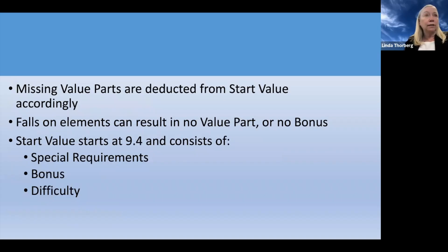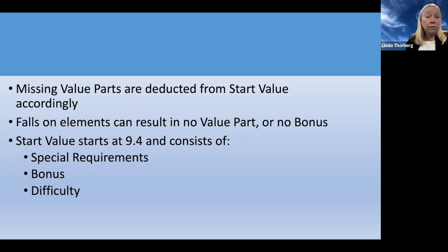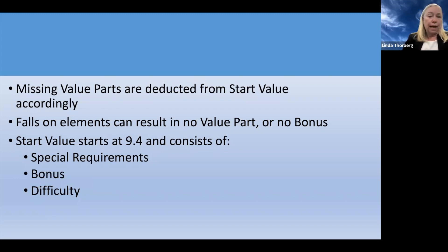Missing value parts are deducted from the start value. Your start value begins at 9.4, then we deduct any missing value parts and any special requirements — each worth two-tenths — from the start value, and then add back in the bonus earned that day. If she falls on an element, it could mean no value part and no bonus if she didn't touch the bar or beam at all, or she may get a value part if she landed on top of the beam or touched the bar before falling, but no bonus. So: start at 9.4, look for anything missing, deduct that, then add back in the bonus.